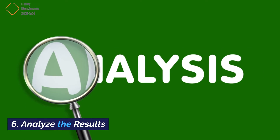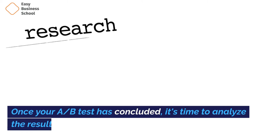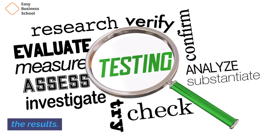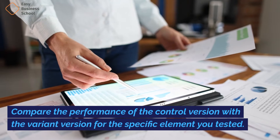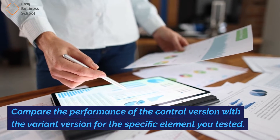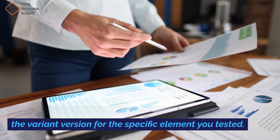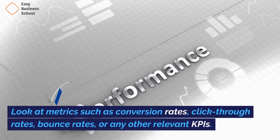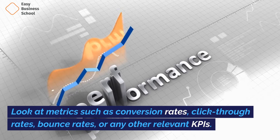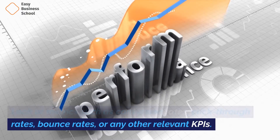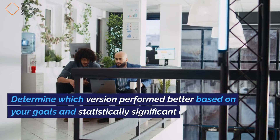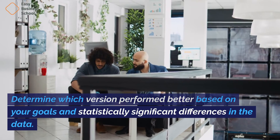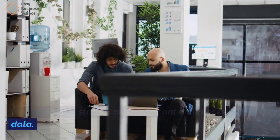Step 6: Analyze the results. Once your A/B test has concluded, it's time to analyze the results. Compare the performance of the control version with the variant version for the specific element you tested. Look at metrics such as conversion rates, click-through rates, bounce rates, or any other relevant KPIs. Determine which version performed better based on your goals and statistically significant differences in the data.